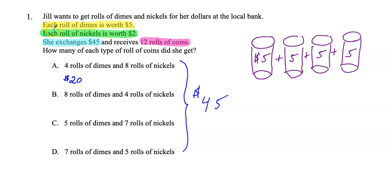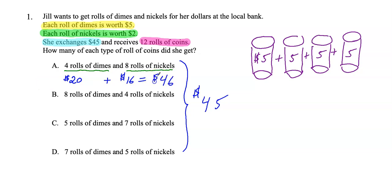You just take the worth of the roll — in this case the dimes, which is $5 — and multiply it by the number of rolls, which was four. So $5 times 4 rolls of dimes is $20, plus the worth of 8 rolls of nickels: $2 times 8 is $16. When I add these two up, I get $46. $46 does not match up with $45, so A cannot be my answer.